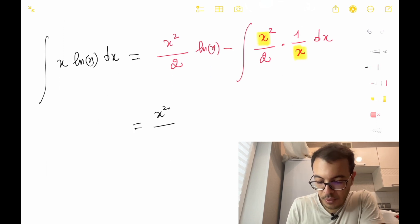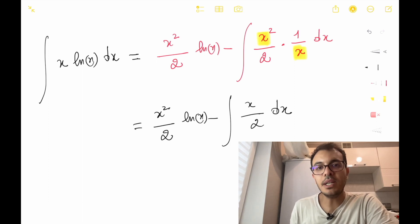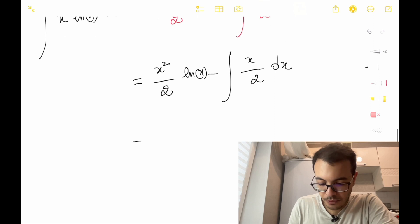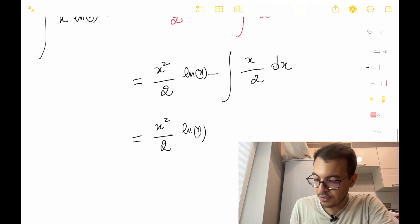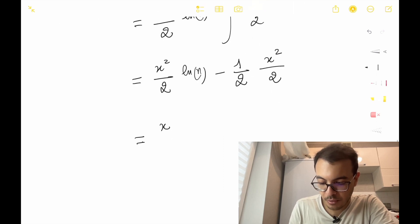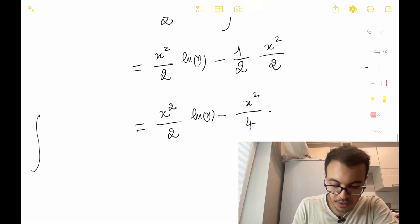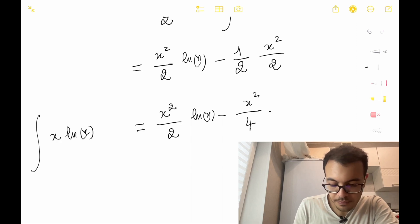Finally we can solve the remaining integral. The integral of x over 2 is 1 over 2 times x squared over 2. So the final result is x squared over 2 times ln(x) minus x squared over 4, and that is the integral of x ln(x) dx.